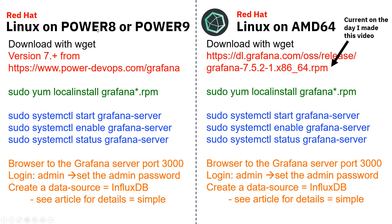If we're using Power computers, then we go to Power DevOps — great guys, I actually met them at a Power Technical University. For AMD64, you go to grafana.com — the DL link means download. You follow your nose and there's a whole list of different platforms. Again, we download, start it up using systemctl, enable it so that on reboot Grafana gets started again, and we can check the status — that's just a positive confirmation it's running.